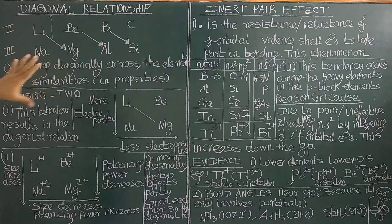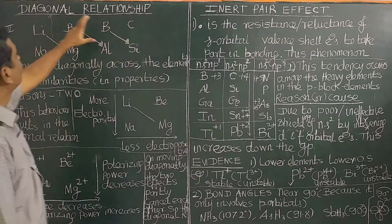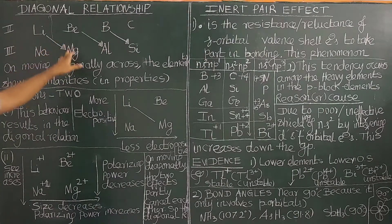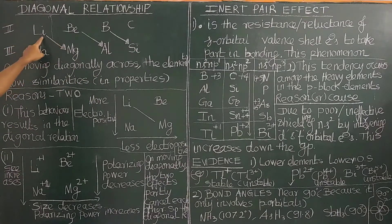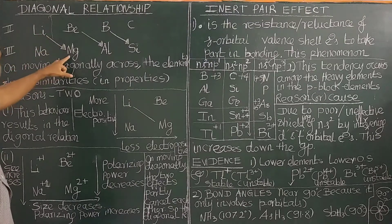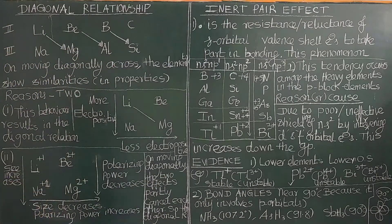We will first study diagonal relationship. Draw the second period: lithium, beryllium, boron, carbon — atomic numbers 3, 4, 5, 6. Next, the third period: sodium, magnesium, aluminium, and silicon. On moving diagonally across the periodic table, the elements show similarities in properties. For example, lithium and magnesium are diagonally related. Beryllium and aluminium are diagonally related. Boron and silicon are diagonally related. They exhibit similar chemical and physical properties.